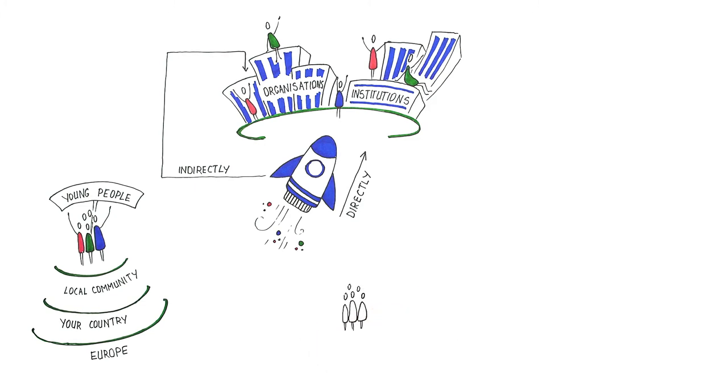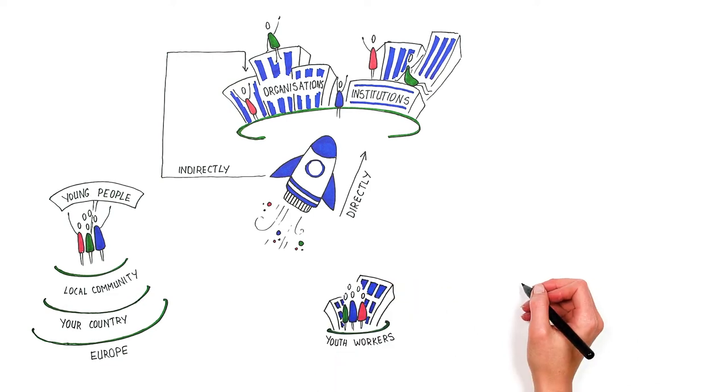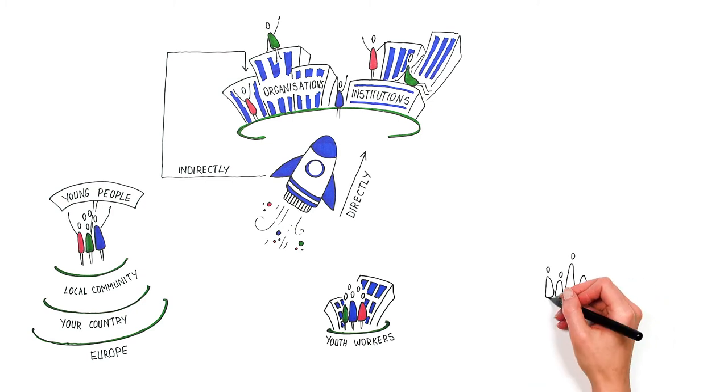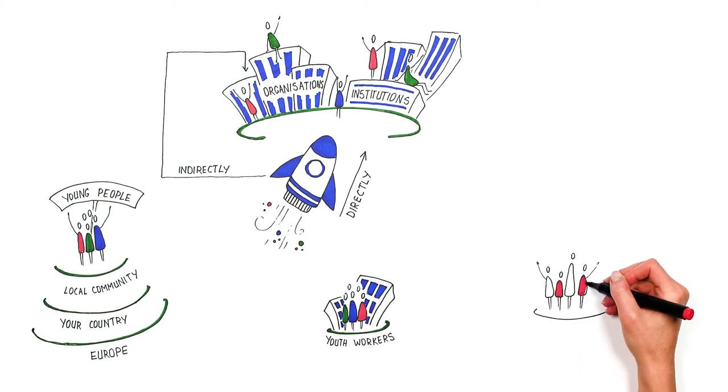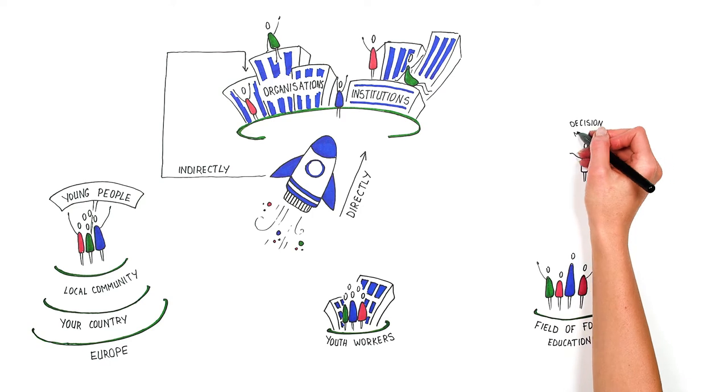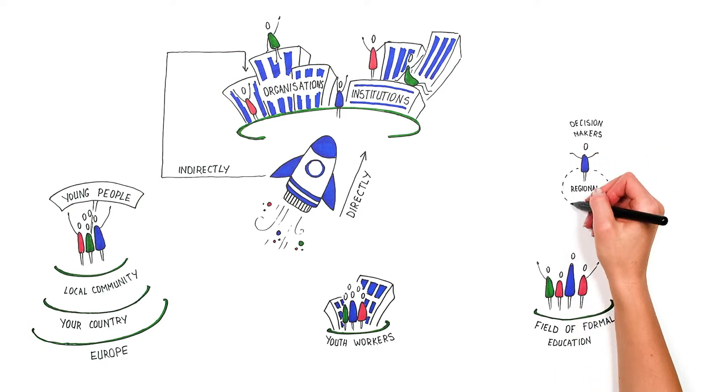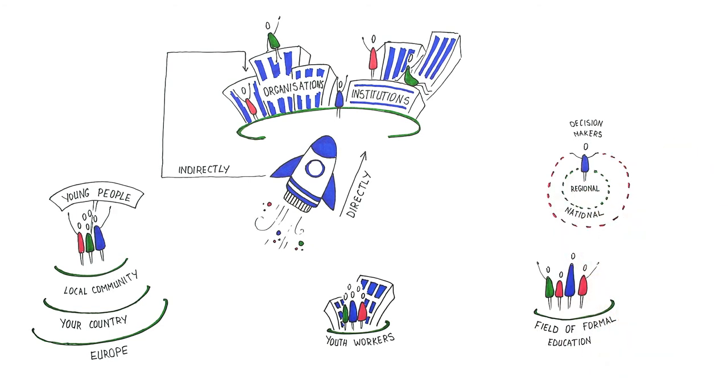It could also be your colleagues and other youth workers from youth centers, clubs, and other kinds of organizations working with youth. If your project reaches out to other fields, your target groups may be people working in organizations from the field of formal education, health, sports, or social care. If you also want to influence decision-makers, you may need to direct your dissemination actions towards regional or national governmental structures.